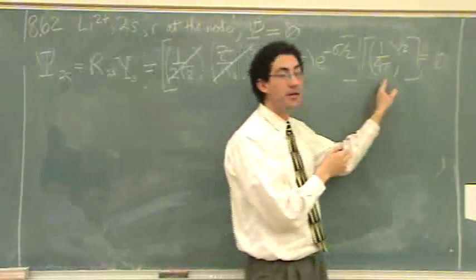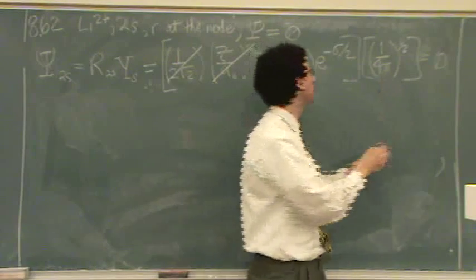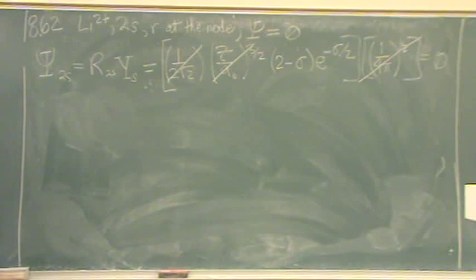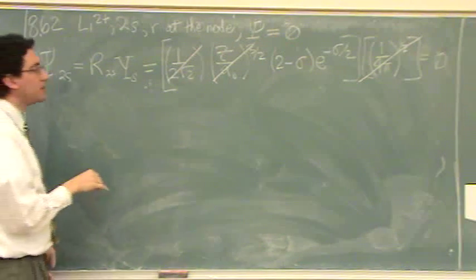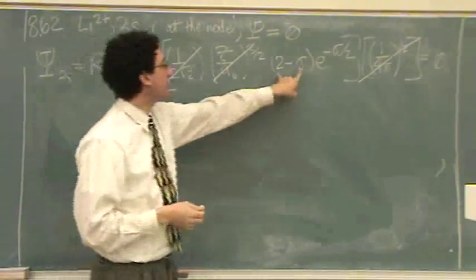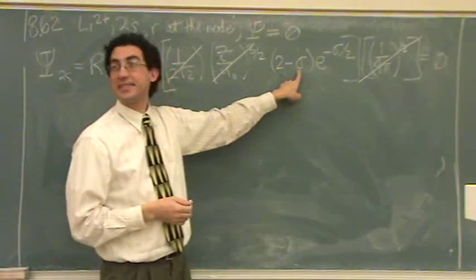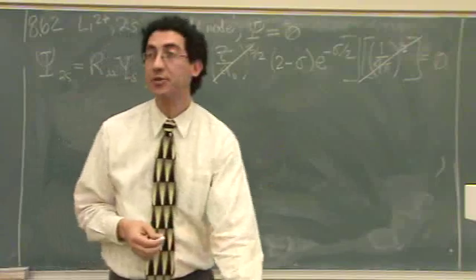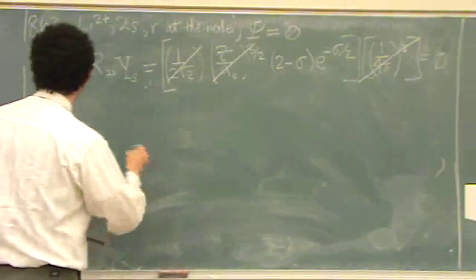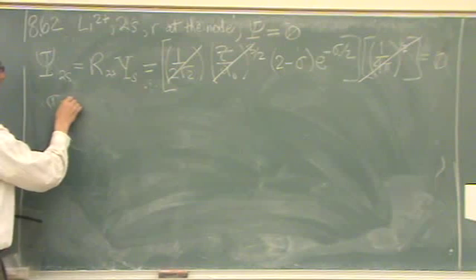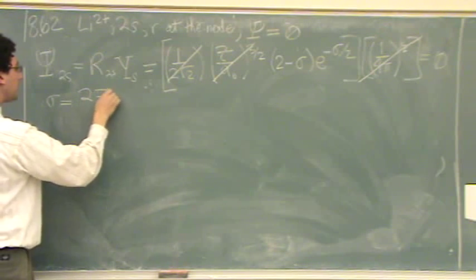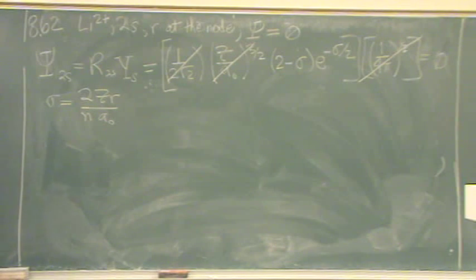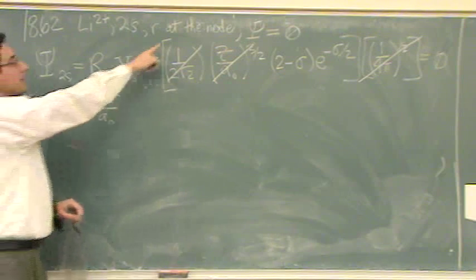This constant term is just a number — gone. So far so good. Now, (2 minus σ): σ has r inside of it, so I can't cancel this, because r is in σ. From Table 8.1, σ equals 2Zr over na₀. So I can't cancel (2 minus σ) — it's got the r term, and I'm trying to find r at the node.